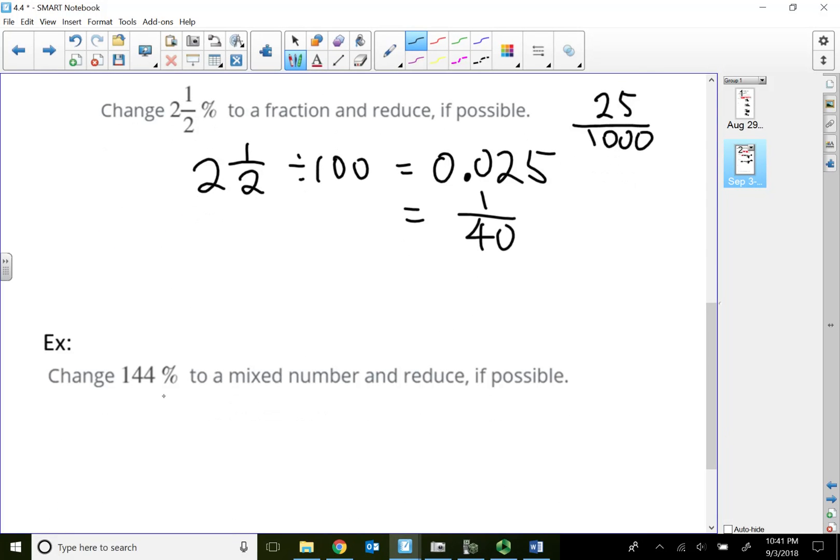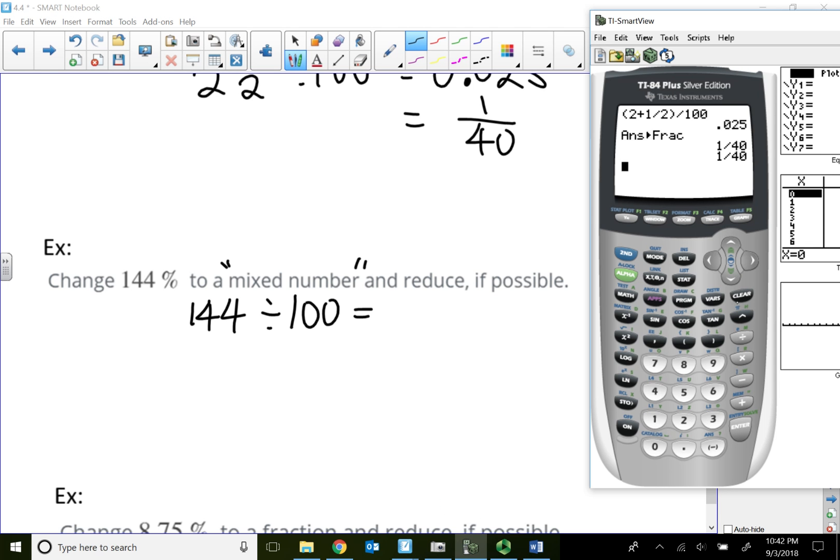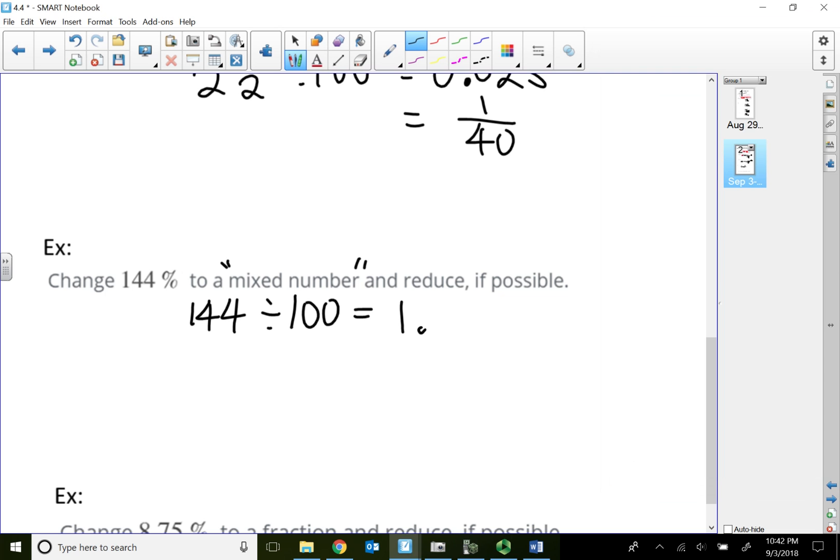Change this 144% to a mixed number. So, rather than go to a fraction, we're going to go to a mixed number. So, same procedure though. Same procedure. 144% need to divide it by 100 in the calculator to strip away the percent notation. So, let's see what that turns out to be. 144 divided by 100, no surprise, it's 1.44. Alright. So, this part converts into a mixed number.